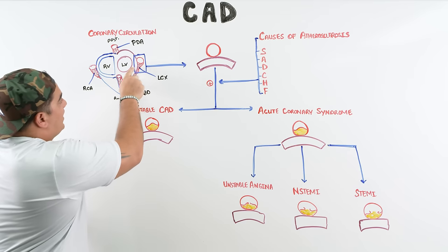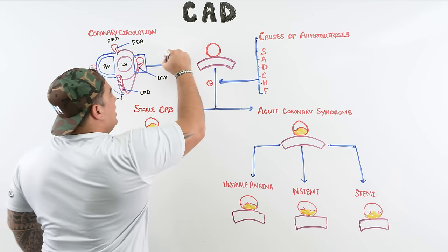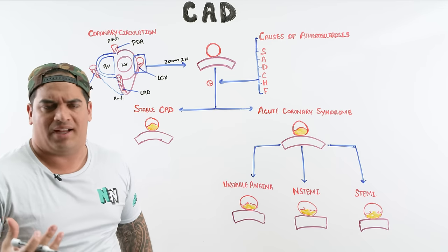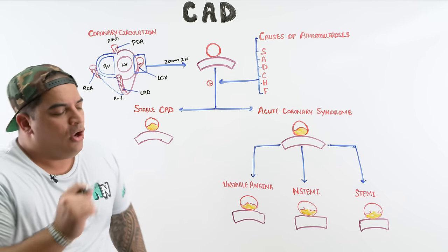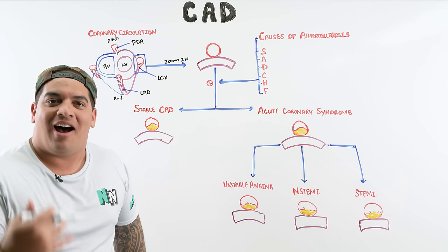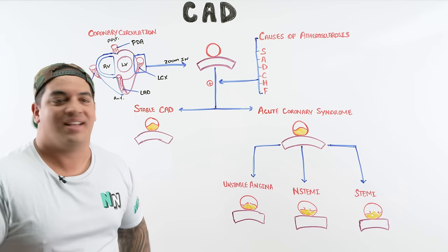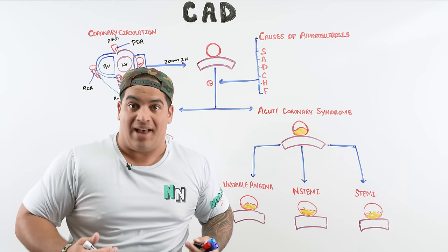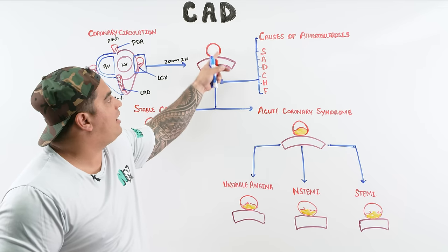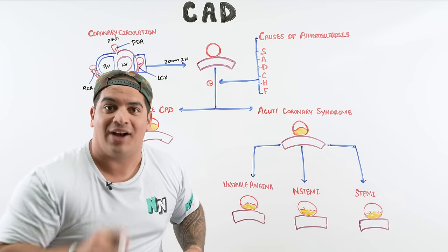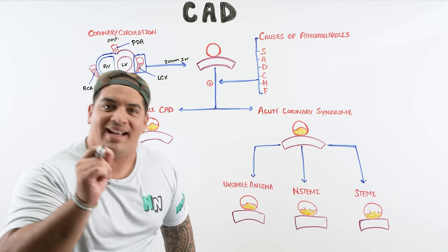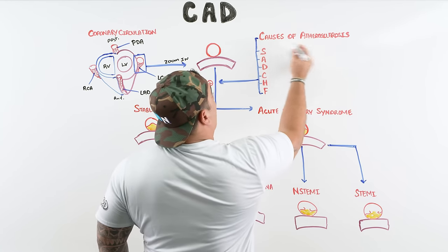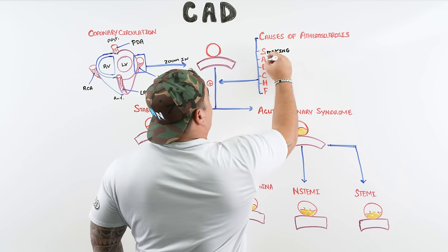Coronary artery disease is a disease of these vessels. Zooming in on a segment of the left circumflex artery and associated myocardium: the most common cause of CAD is atherosclerosis — fatty plaques that develop within the wall of the blood vessel and occlude blood flow. To remember what causes atherosclerosis, use the mnemonic SAD CHF: Smoking, Advanced age (>45 for males, >55 for females), Diabetes, Cholesterol, Hypertension, and Family history.